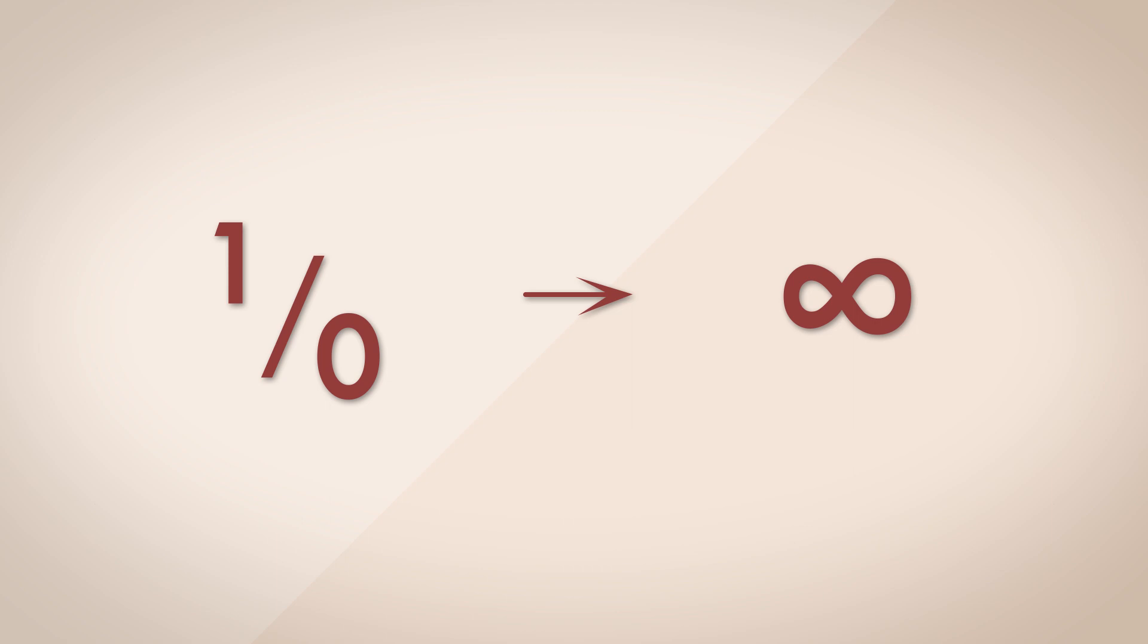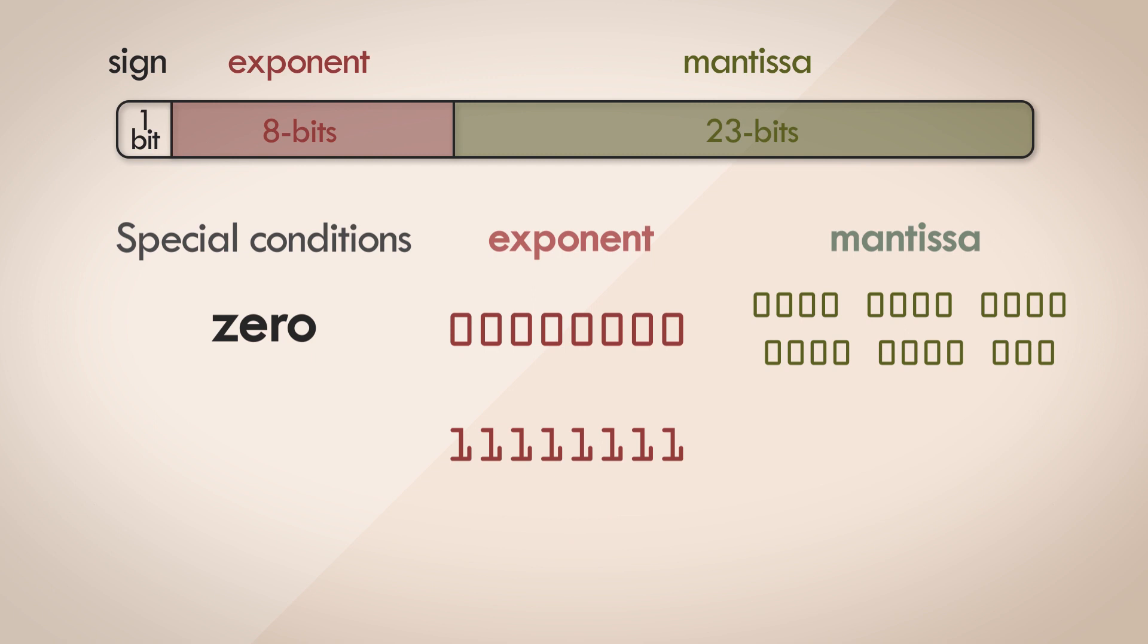And in floating point numbers, you can express this. If all of the bits of the exponent are set to one, and if all of the bits of the mantissa are set to zero, then this results in the floating point number being interpreted as infinity.